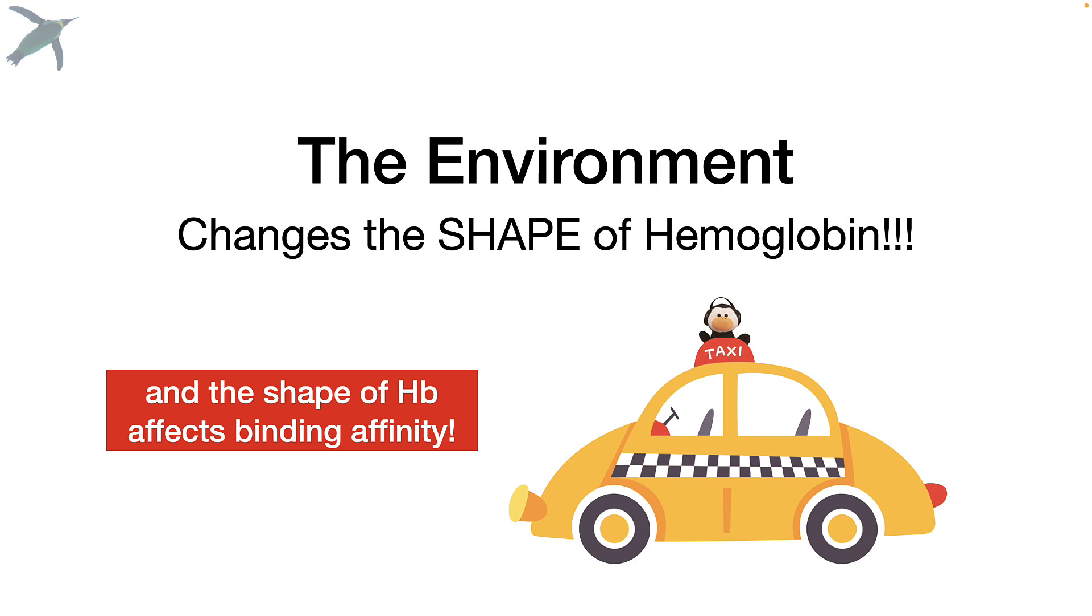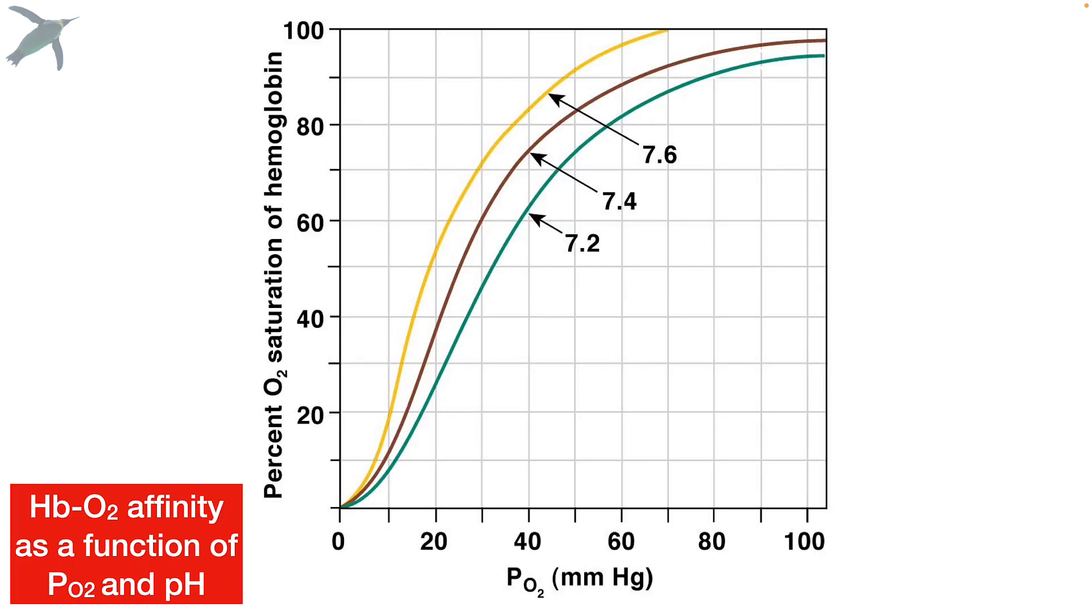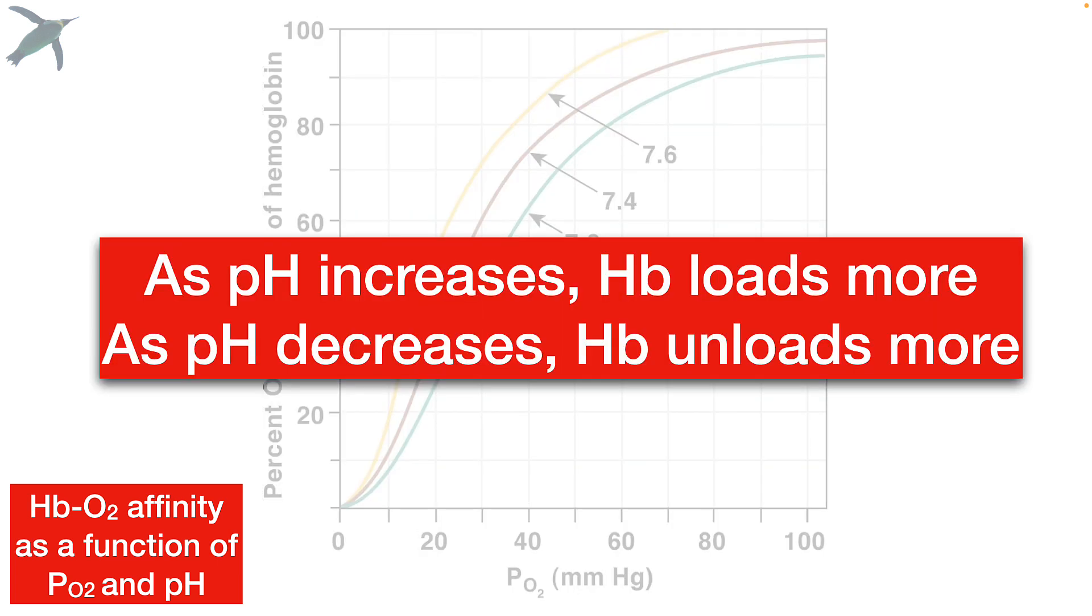The environment that the hemoglobin is in changes its shape. Let's look at pH. So now we've got three curves here, and we're going to compare the different pHs and see how that affects saturation. First, 7.6, this yellow curve. Now we're holding the number of passengers constant in all these cases. But at a pH that's more alkaline, we get a percent saturation of about 82%. pH of 7.4 is maybe 73%. This is actually the curve we just looked at a second ago. And when conditions are acidic, 7.2, all the taxis are about 61% saturated. So as pH goes up, hemoglobin loads more. As pH goes down, hemoglobin unloads more. This is due to the shape change of hemoglobin. The affinity between hemoglobin and oxygen is changing as the pH changes.